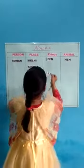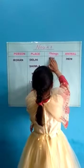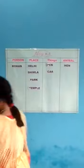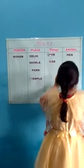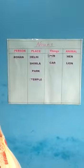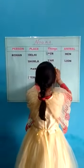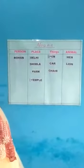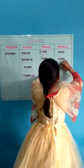Card. Card is the name of a thing. Lion. Lion is the name of an animal. Chair. Chair is the name of a thing. Cat. Cat is the name of an animal.